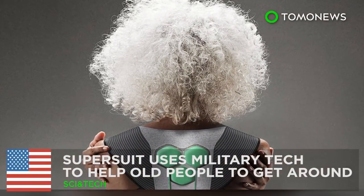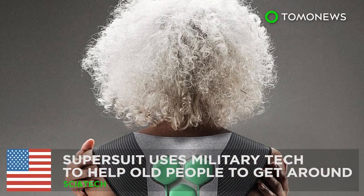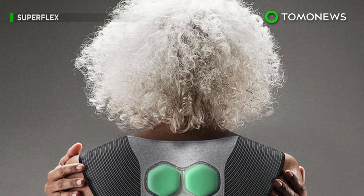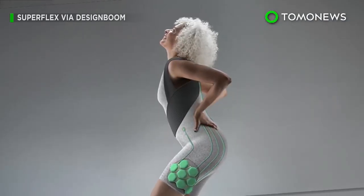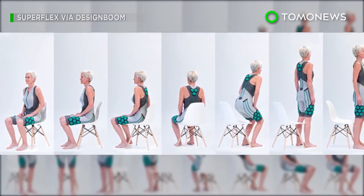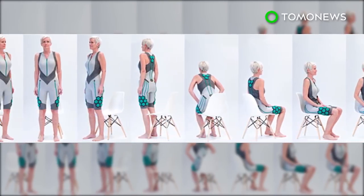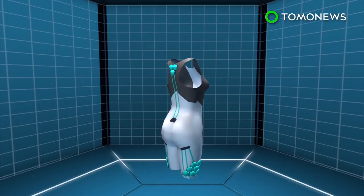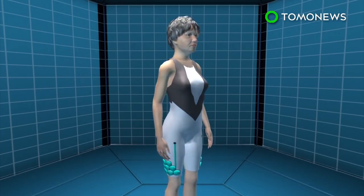This super suit can help your grandmother get around more easily. A California-based startup has designed a powered suit that can provide extra muscle strength for elderly people and increase their mobility. The Aura-powered suit is a smart suit designed to be worn in direct contact with the body.